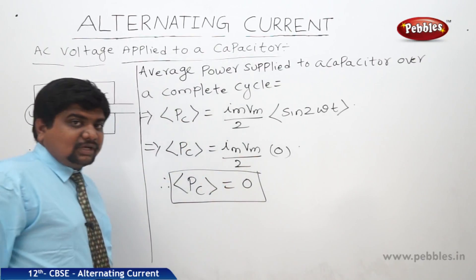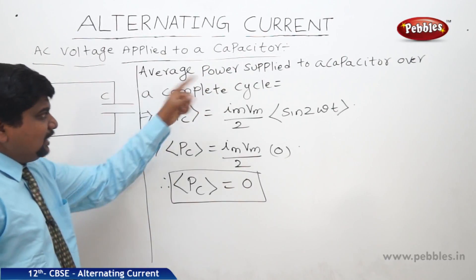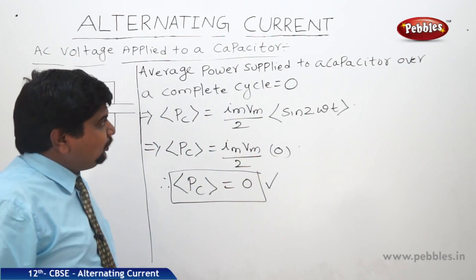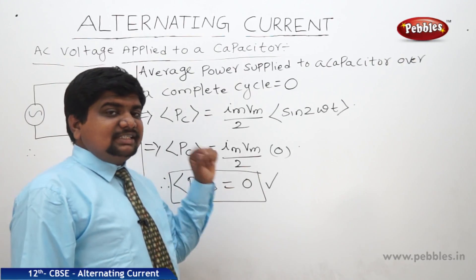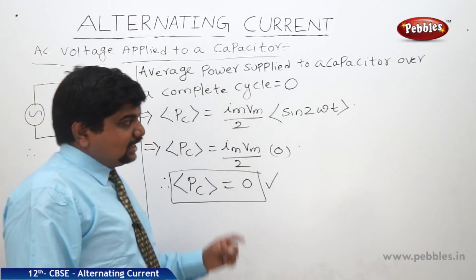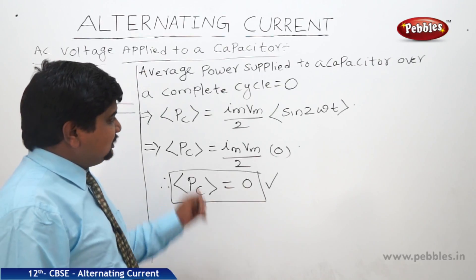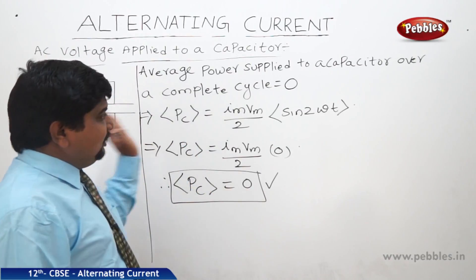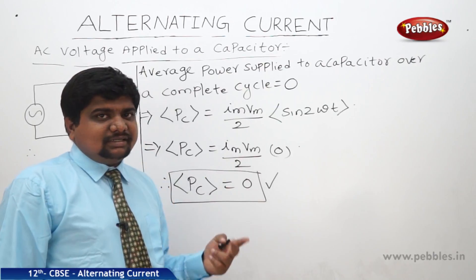Here also like inductor, average power supplied to a capacitor over a complete cycle is 0. In inductor it is 0, in capacitor it is 0, but in case of resistors it is not 0, it has some particular positive magnitude. These are the related things and the phasor diagrams of the resistors, capacitors and inductor.